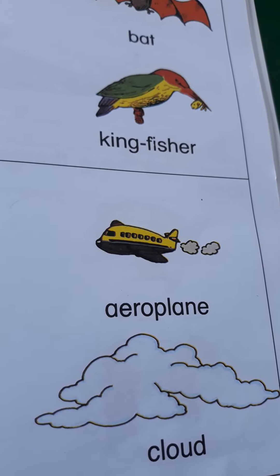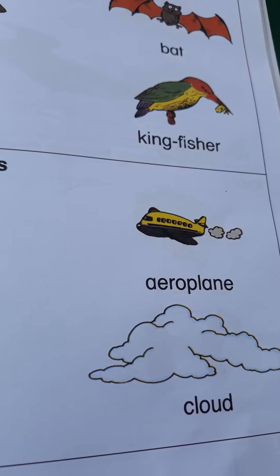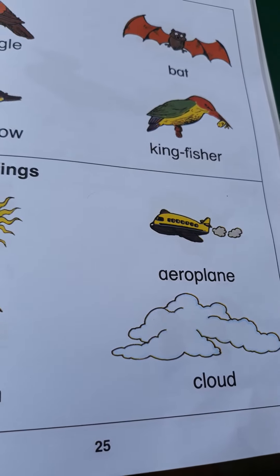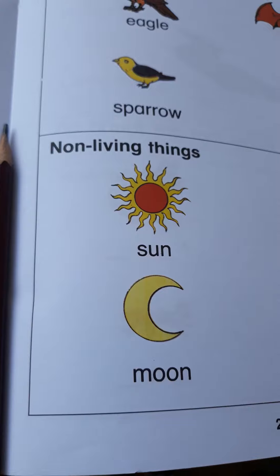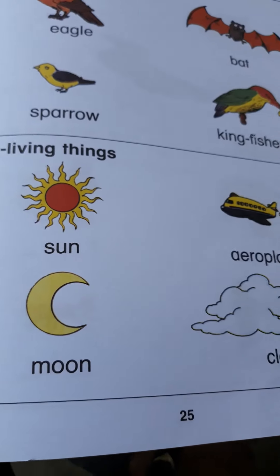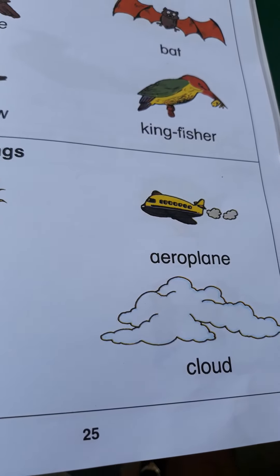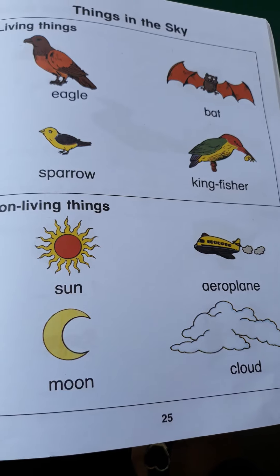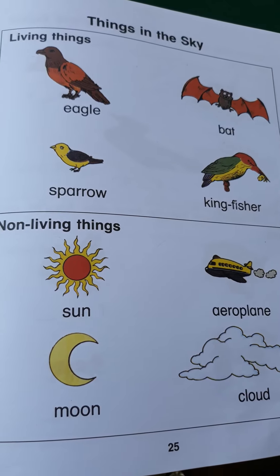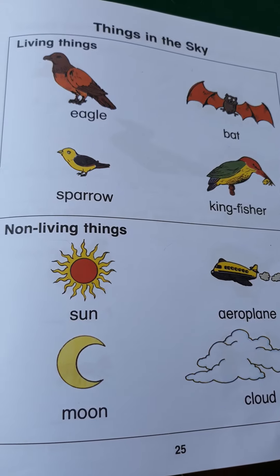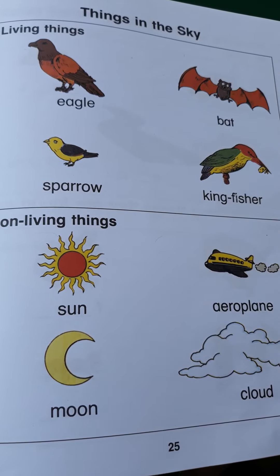Airplane — when it flies up, it is in the sky. Airplane is also a non-living thing. Moon is also a non-living thing. And clouds — we find clouds in the sky. Stars — we find stars are non-living things in the sky. These are all non-living things in the sky.